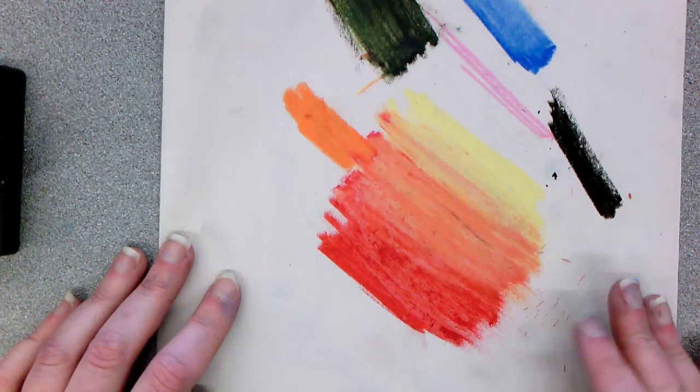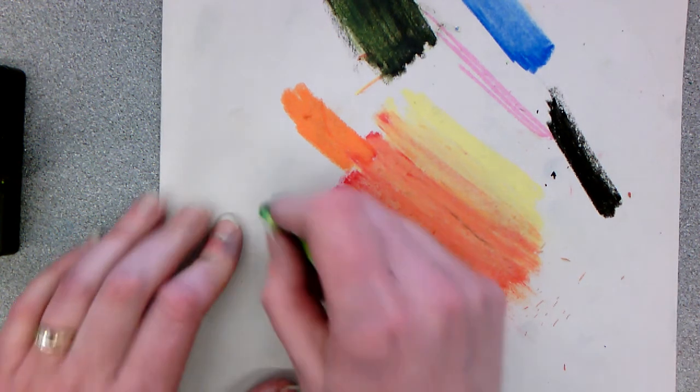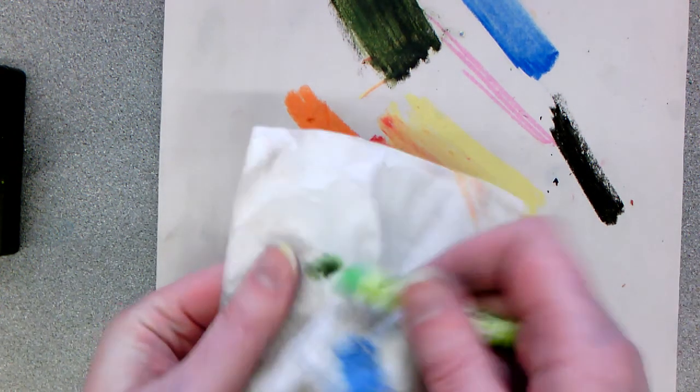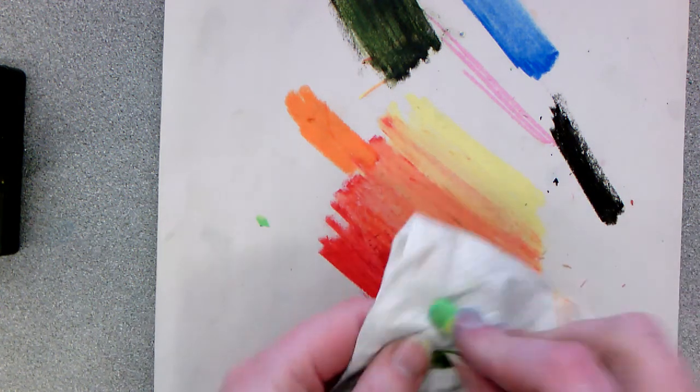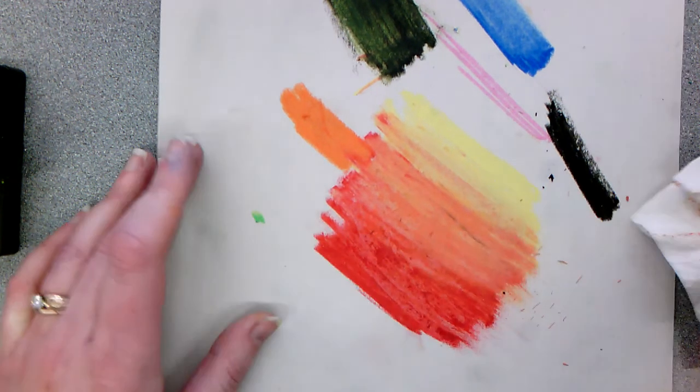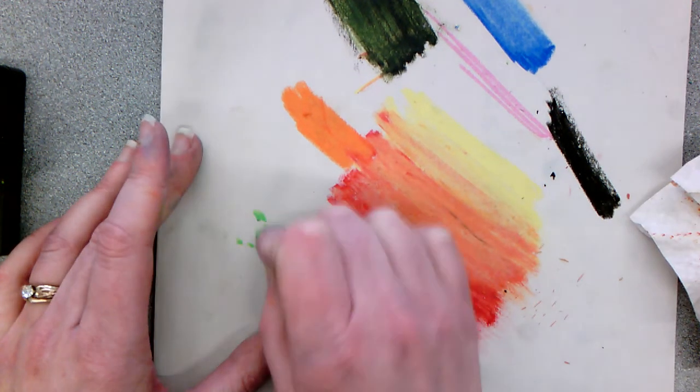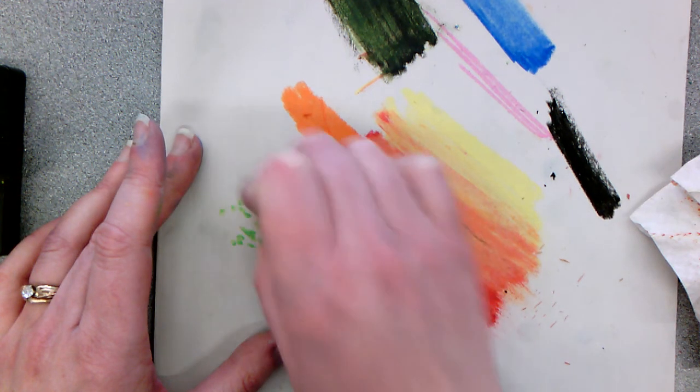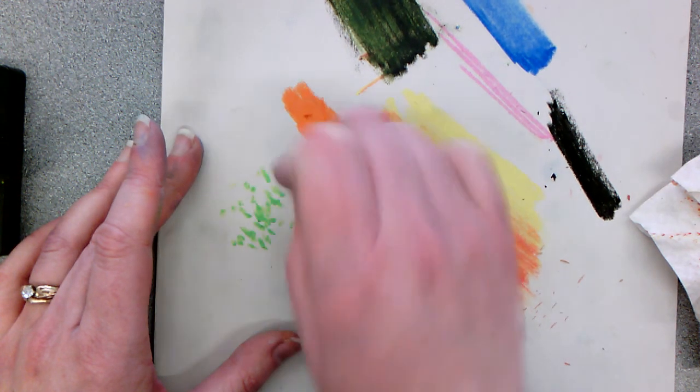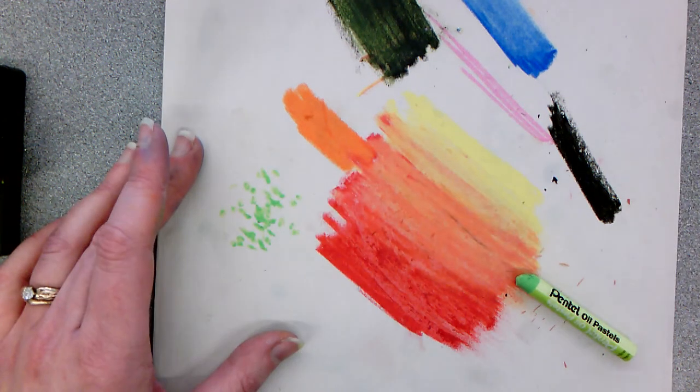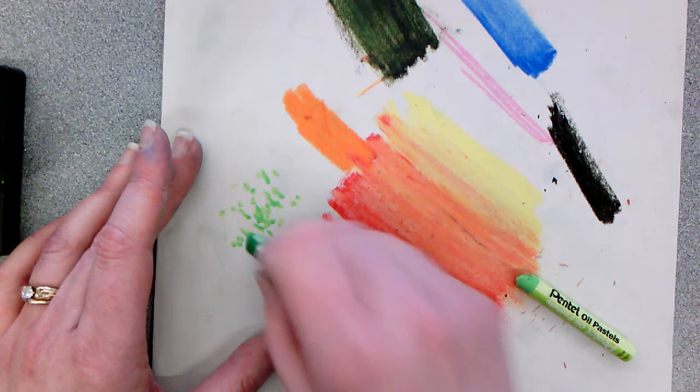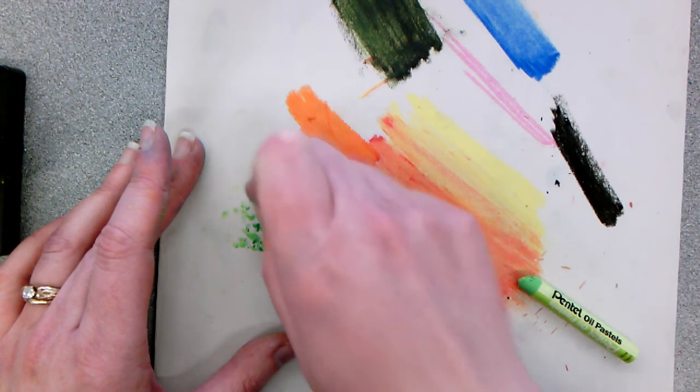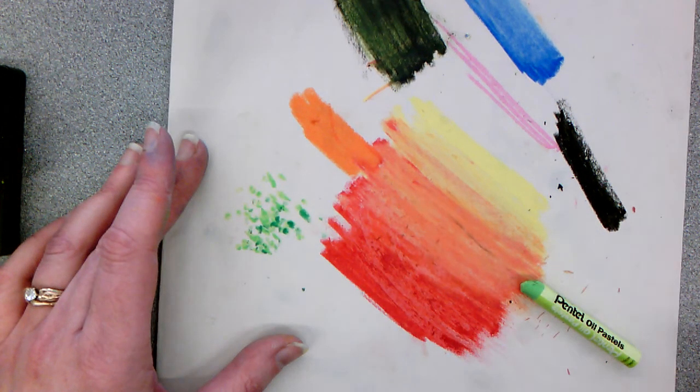Of course, one of my favorite things to do with oil pastel is—I'm going to clean the black off of here—is to make stipple dots. Because they just show up so well. All of your effort is there. So if you're drawing a bush in your foreground and you want lots of detail really fast, you can do stipple dots and it just builds up that bush really fast.